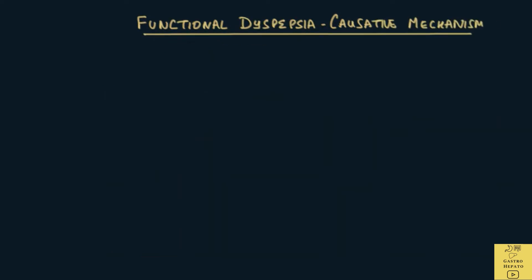So what causes functional dyspepsia? First, abnormal stomach emptying — abnormal movement and coordination of the muscles of the stomach. These muscles aid in the emptying of food contents from the stomach. In functional dyspepsia, a slowdown in gastric emptying is common. Less common is the opposite, which is a rapid emptying of stomach contents.